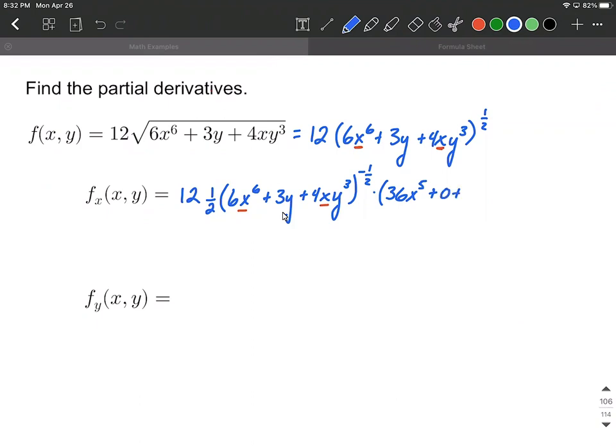Plus, let's go ahead and bring along our constants, the four and the y cubed, and then the derivative of x is just going to be one multiplied by those constants. And there we have the derivative, the partial derivative of f with respect to x.